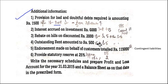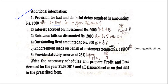Outstanding rent amounting to rupees 500 — where does rent appear? Schedule 16, operating expenses. So in operating expenses we have to add the outstanding rent. Then another adjustment we have to write under other liabilities and provisions — because outstanding rent is a liability. So all other liabilities we have to write under Schedule 5.